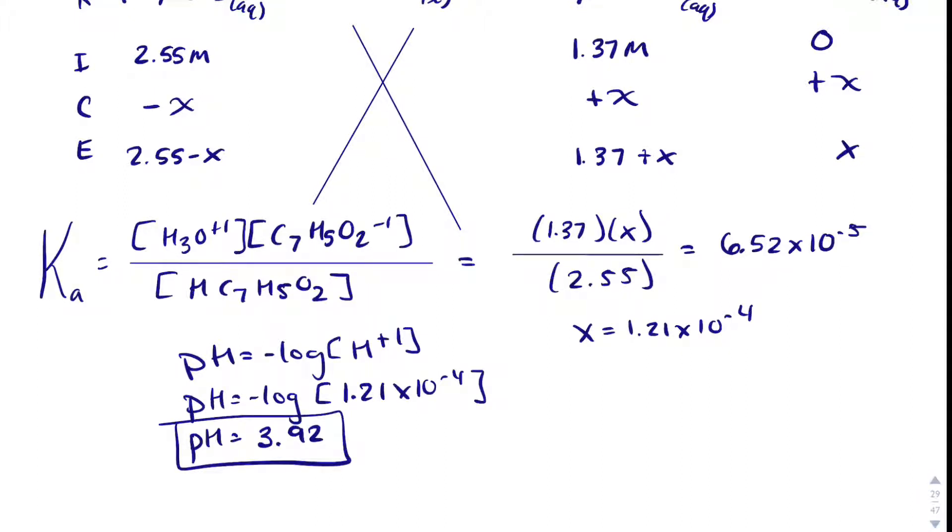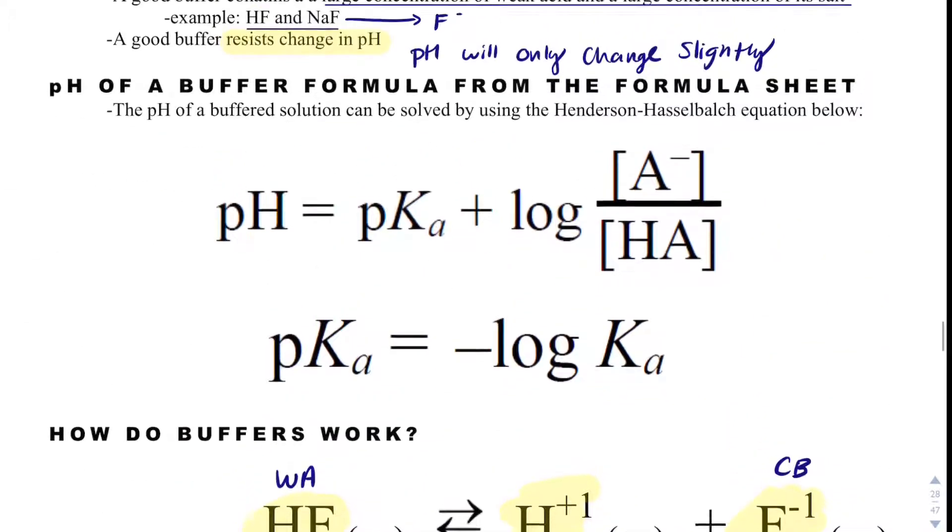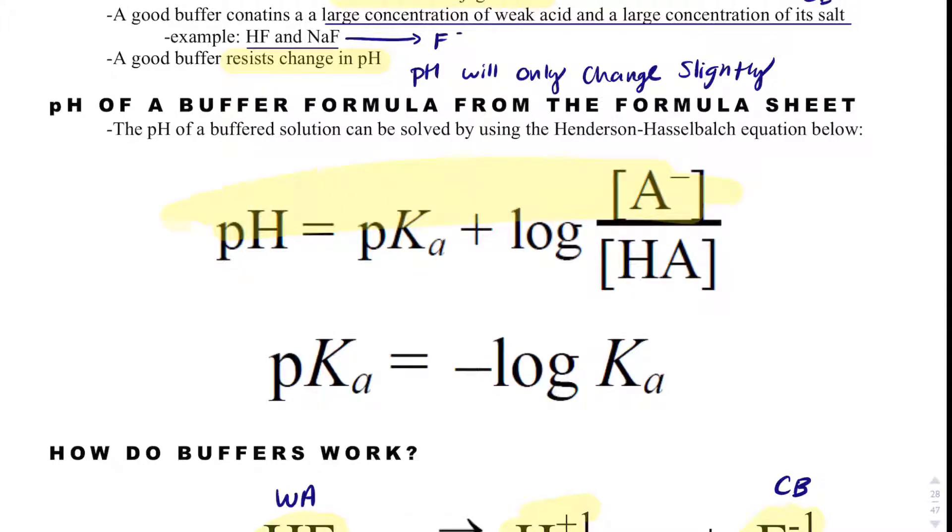So this is essentially just a common ion question right now. But what we have is if we can recognize something as a common ion question, there's this equation that makes all of this work a little bit easier. What that equation is is it's on your formula sheet, and it's referred to as the Henderson-Hasselbalch equation. And what it says is that the pH equals the pKa, which remember pKa is just negative log of the Ka, plus the log of your conjugate base concentration divided by your acid concentration.